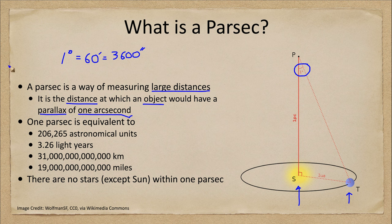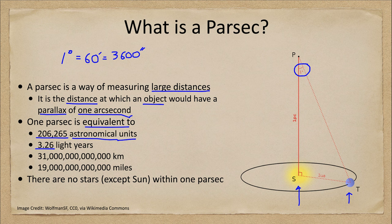We can look at some equivalents here. One parsec is equivalent to 206,265 astronomical units, so something at one parsec distance would be more than two hundred thousand times the distance of Earth from the Sun. It is 3.26 light years, meaning light would have to travel for over three years to cover one parsec. In kilometers, that would be 31 trillion kilometers, or 19 trillion miles.